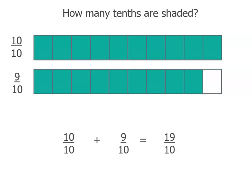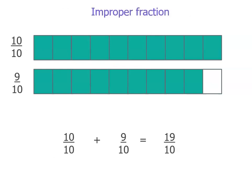This is an improper fraction, and we call it that because the numerator — the number on the top — is larger than the denominator, the number on the bottom. And that's it. That's an improper fraction.